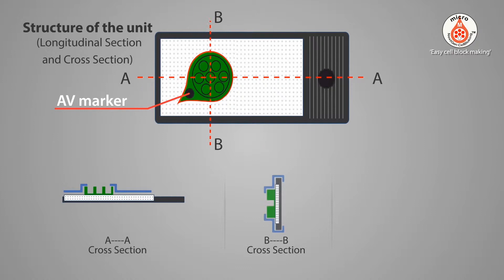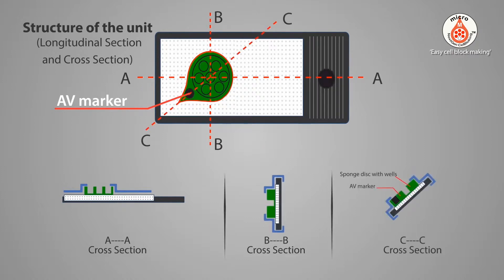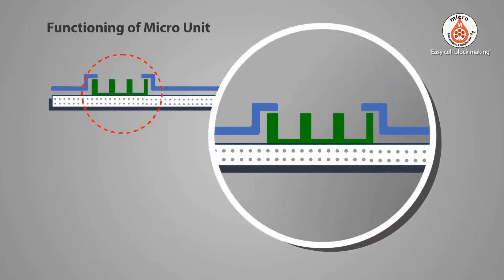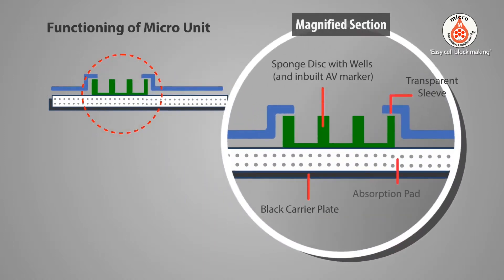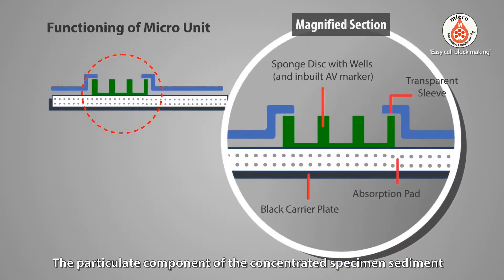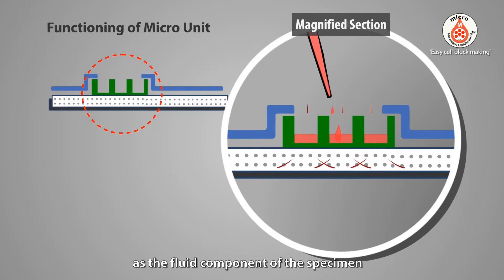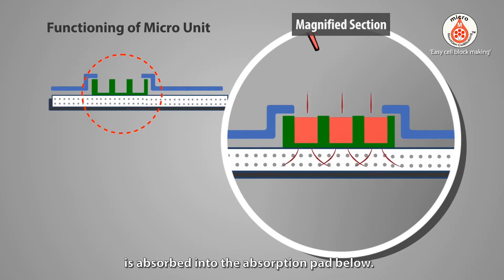The structure of the micro unit is explained with longitudinal and cross sections. Regarding functioning of the micro unit: the particulate component of the concentrated specimen sediment accumulates in the walls and sponge, as the fluid component of the specimen is absorbed into the absorption pad below.